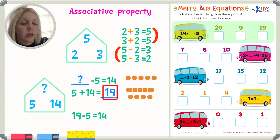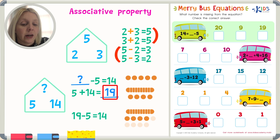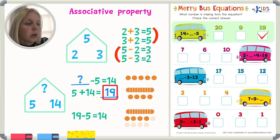We need to check the answer as the directions say. I'm going to plug nineteen back in. I'll make nineteen a column of ten and nine units of one, then subtract five, which leaves me with one column of ten and fourteen total — which gives me fourteen. So that lets me know that nineteen was the correct answer. Nineteen makes sense, so I'm going to put a check next to nineteen.